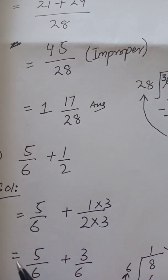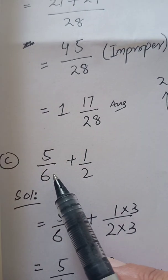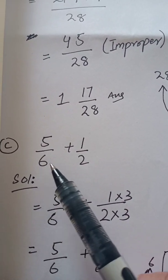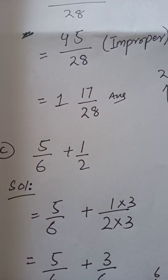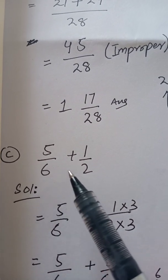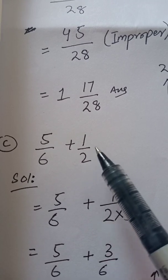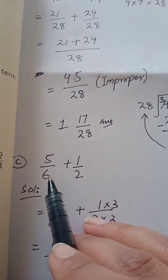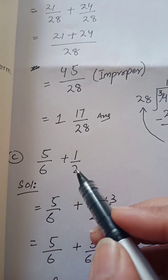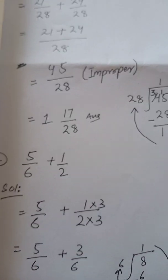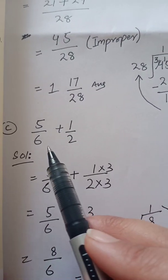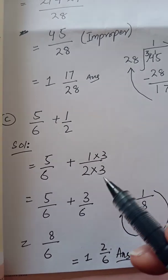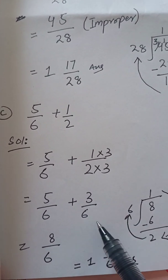Now we will solve part C: 5 by 6 plus 1 by 2. Two fractions are being added, denominators are different — so these are unlike fractions. Pehle in ko like banayenge. Denominator mein six hai — bada number six hai. Chhhota number two ko hum teen se multiply karke six bana saktay hain, toh LCM lene ki zaroorat nahi. Teen se multiply karlungi — denominator aur numerator dono mein — toh three by six aa jayega.